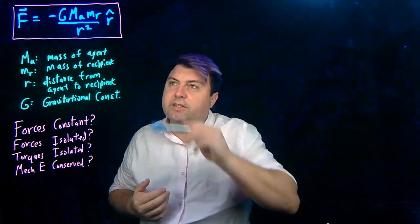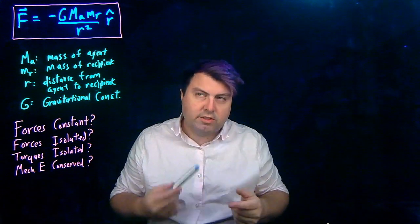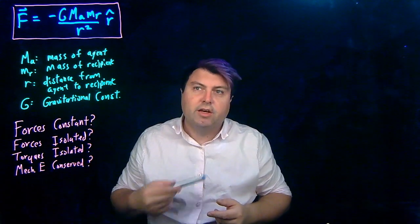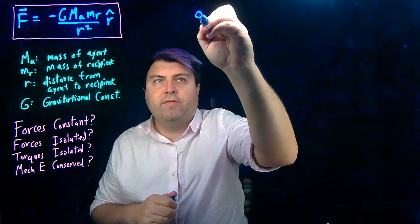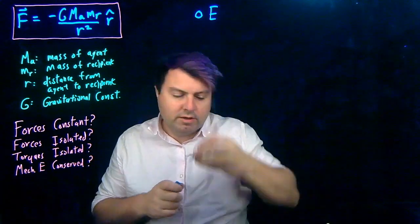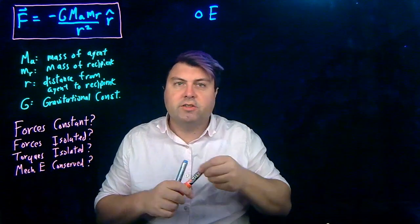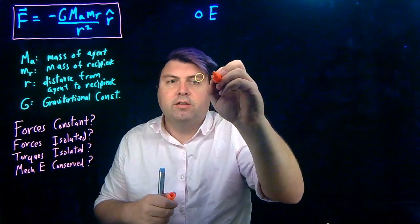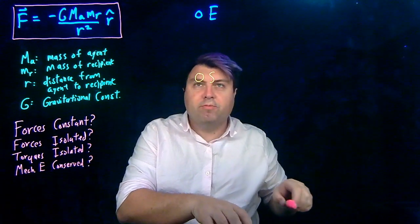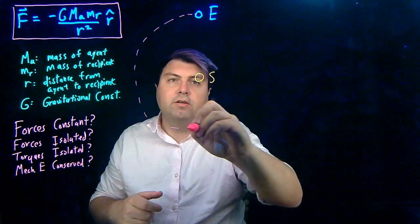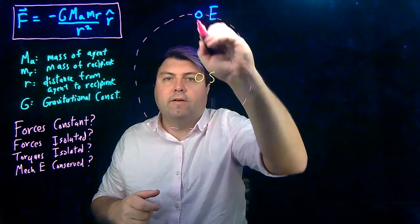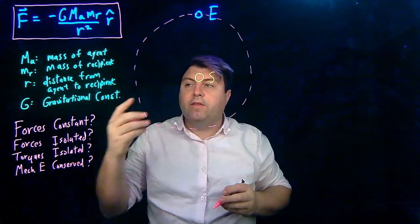And then this distance, we need to think of a case in which the distance will be constant. A good example of this would be a circular orbit. So if we have our Earth here and it's orbiting our Sun here, then if we come up with a circular orbit...